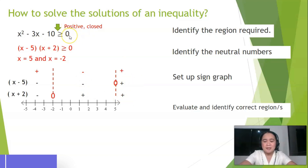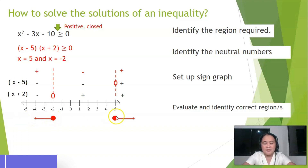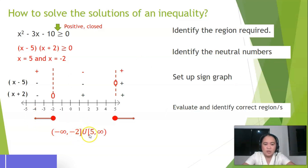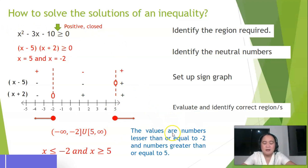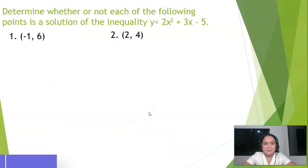To the right of zero is positive, to the left is negative. The first region is positive, the second is negative, and the third is positive. Since we need positive regions and the graph is closed, we refer to the first and third regions — negative two to the left and positive five to the right. The interval is: negative infinity until negative two bracket, union with bracket five until positive infinity. The equation: numbers lesser than or equal to negative two and numbers greater than or equal to five.